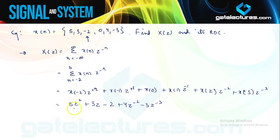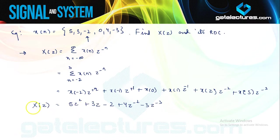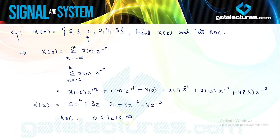Looking at this expansion for X(Z): if Z is not equal to 0 or infinity, each term in X(Z) will be finite, and consequently this Z-transform X(Z) will converge. X(Z) includes both positive and negative powers of Z. Therefore, similar to the previous problem, the ROC for this signal is the entire Z-plane, not including 0 and infinity. Since the given sequence x(n) was a finite duration sequence, the ROC for its Z-transform is going to be the entire Z-plane.